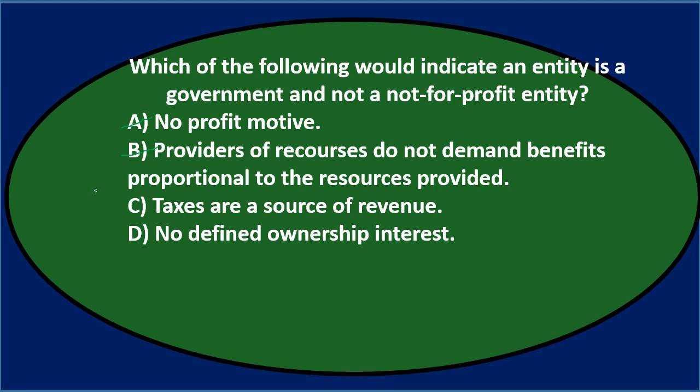Option C, taxes are a source of revenue — taxes are something the government can levy, and not-for-profit organizations typically cannot impose taxes. That makes it a distinctly governmental characteristic. Option D, defined ownership interest, sounds more like a for-profit organization. Between C and D, option C is more clearly governmental. Final answer: C — taxes are a source of revenue.